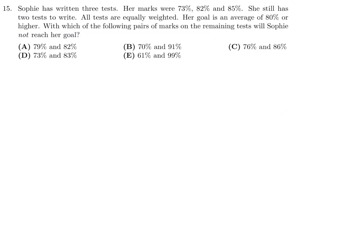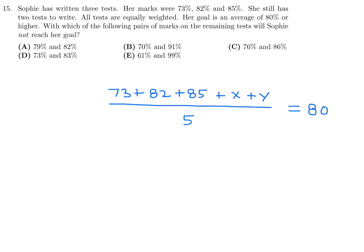Sophie has written three tests with marks of 73, 82, and 85. She still has two tests to write, all equally weighted. Her goal is an average of 80 or more. So (73 plus 82 plus 85 plus X plus Y) divided by 5 must be greater than or equal to 80. That gives 240 plus X plus Y greater than or equal to 400, so X plus Y must be greater than or equal to 160.